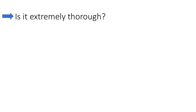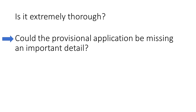Even if the provisional patent application is thorough, it may not be identical and could be missing an important detail that may allow the rejection to be overcome. So how can we see for ourselves what this provisional patent application contains?